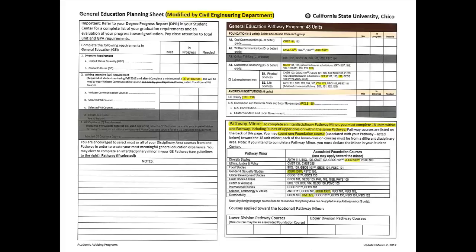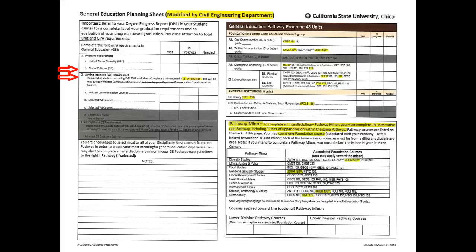As a civil engineering student, you don't have to take all of the general education requirements that all students need to take. We've grayed out the requirements that don't pertain to you as a civil engineering student. On the first page, it gives a list of some of the requirements you need to meet when selecting your general education classes. It talks about U.S. diversity, global cultures, and writing intensive courses. These are redundant with the Excel file which includes the course requirements discussed in the first video, but they're included here for completeness.